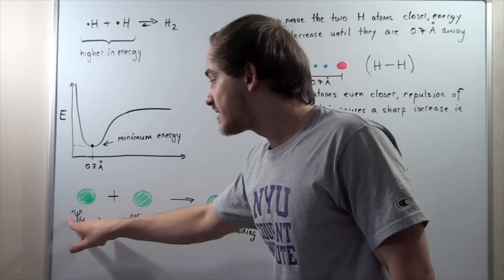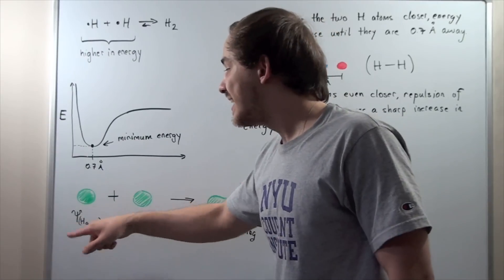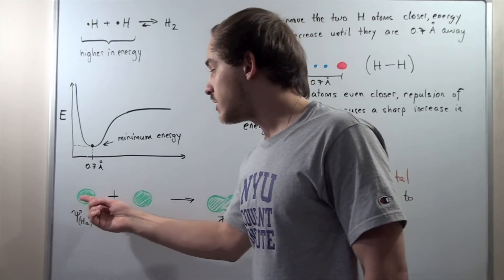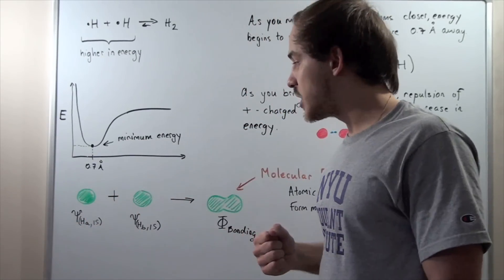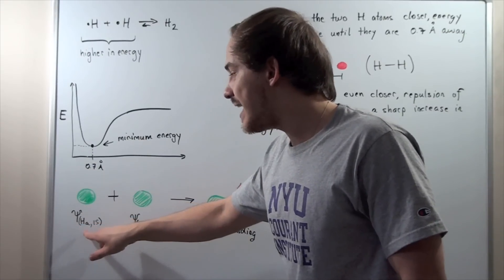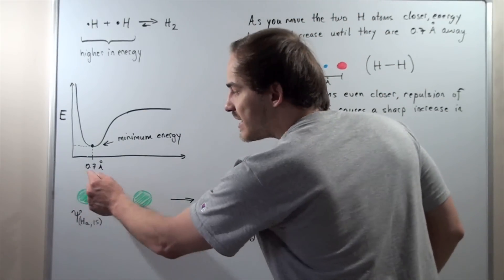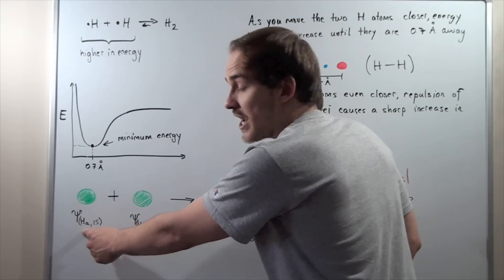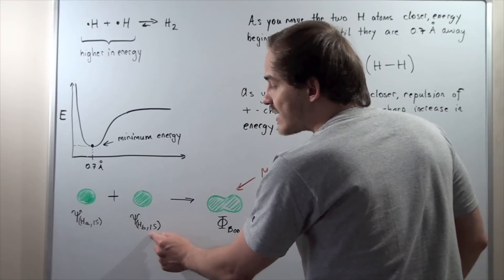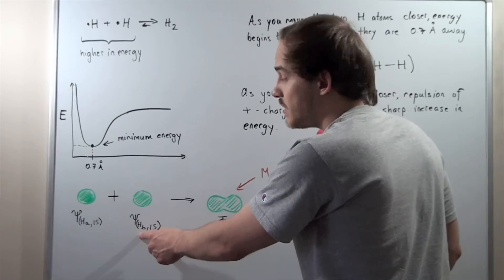This psi, Greek letter psi, simply represents the orbital or wave function. So, let's say psi subscript HA comma 1s simply means that this is the 1s orbital of our HA atom. And this is the 1s orbital of our HB atom.